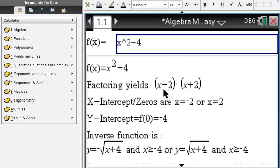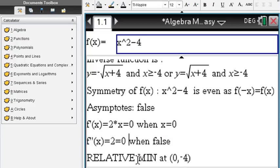You can see this is the function factor, its zeros, x and y intercepts, inverse function, symmetry asymptotes, derivatives are shown, relative min and maxes, everything you need to know about a specific function. Just enter it and you will get your answer, don't even need to press enter.